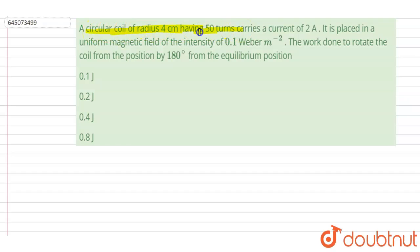Hello everyone. A circular coil of radius 4 centimeter having 50 turns carries current 2 ampere. It is placed in a uniform magnetic field of intensity 0.1 Weber per meter square. Work done to rotate the coil by 180 degree from the equilibrium position.